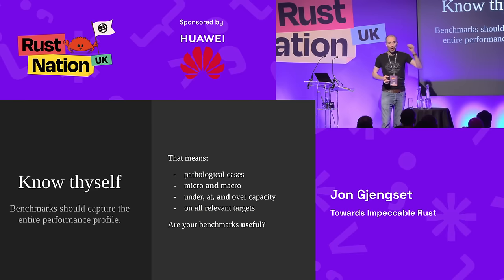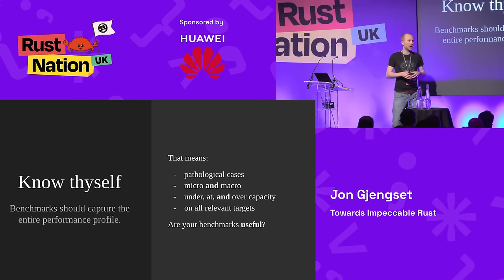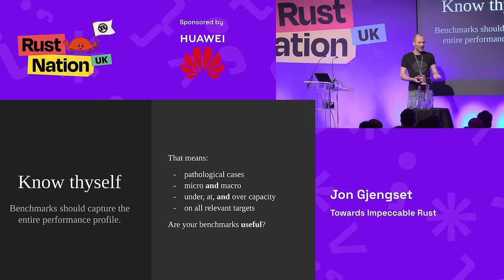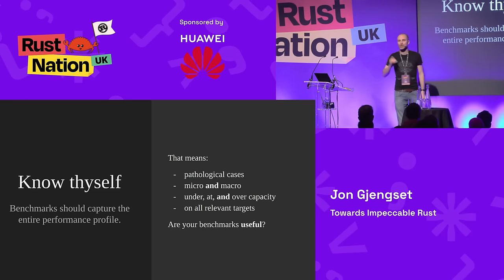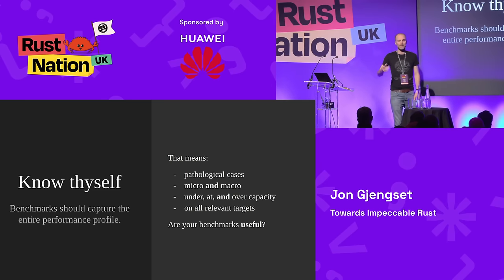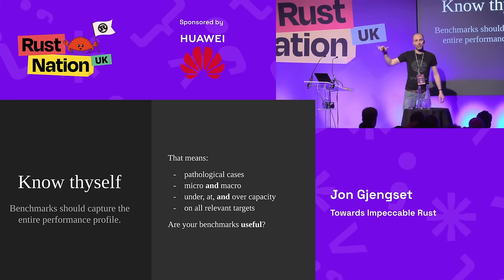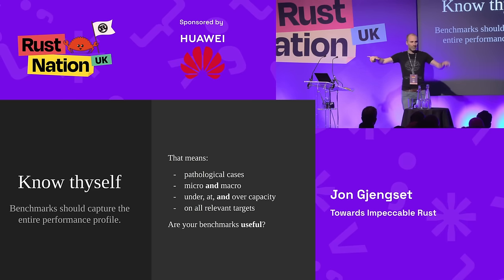Finally, you have to run benchmarks on all the targets that matter. It doesn't matter what your performance results are on a beefy Linux x86 machine in CI if you're deploying to a tiny Raspberry Pi — those benchmark results are not representative. Your benchmarks should be useful: if they tell you something got slower or faster, that should correspond to something actual users care about. Similarly, if users report problems that weren't caught by your benchmarks, that indicates you're missing relevant benchmarks.